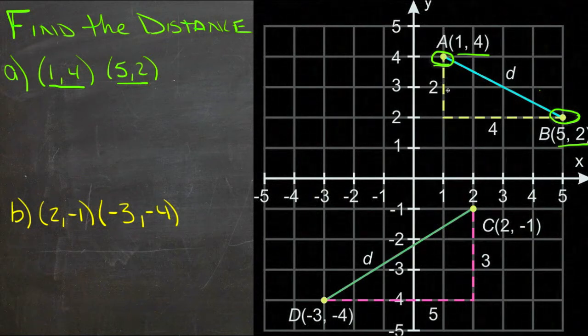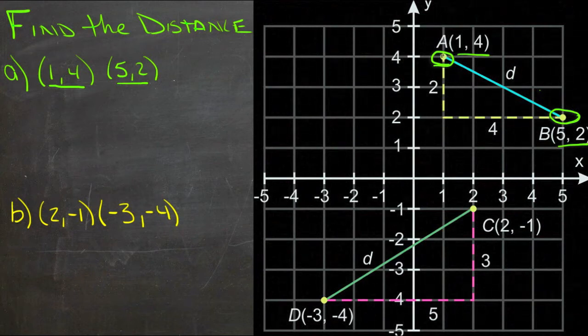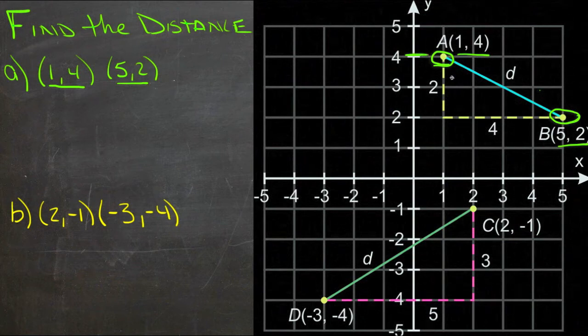What we can do, though, is use the Pythagorean Theorem to find the length of a side of a triangle. And the other two sides of the triangle are just the difference in the y-coordinates. So this one has a y-coordinate of 4. And this one has a y-coordinate of 2. The difference between those coordinates then is two units.